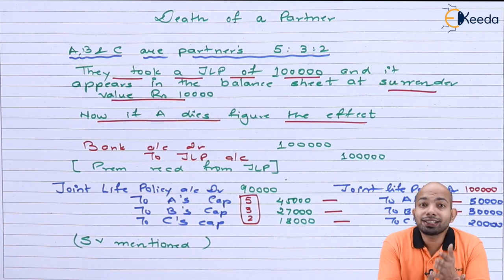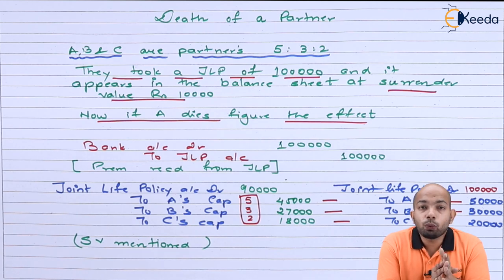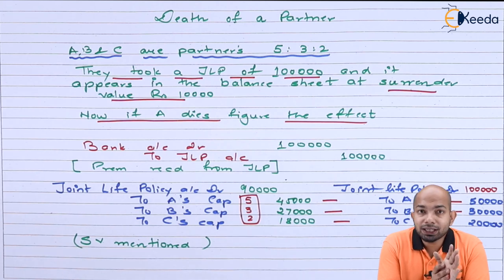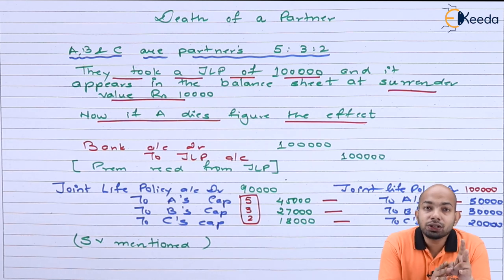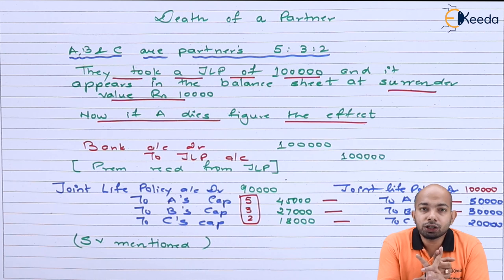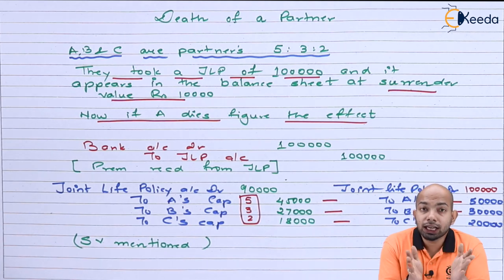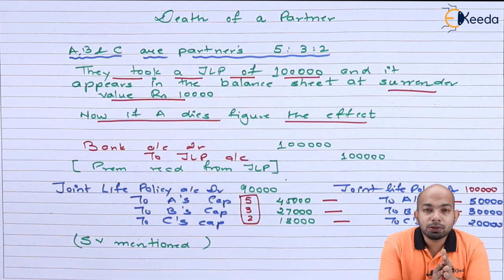I hope this video gives you a lot of clarity about how to deal with special transactions related to joint life policy, and what journal entries are supposed to be passed when a joint life policy is considered at the death of a partner. JLP — joint life policy — is dealt in such a manner. The two scenarios are: Plan A, where the joint life policy is mentioned at surrender value in the balance sheet, and Plan B, where it is not mentioned at surrender value. Thank you for watching this video. Stay tuned with Ikeda and keep subscribing to Ikeda.